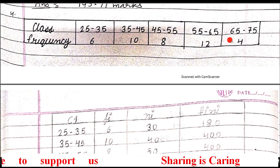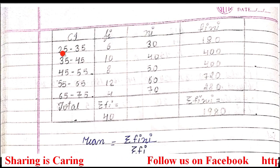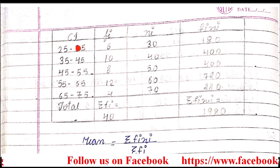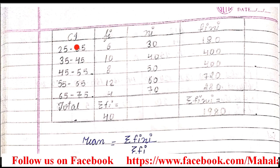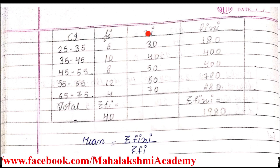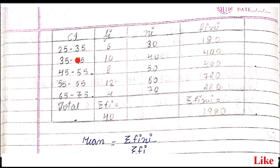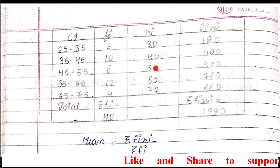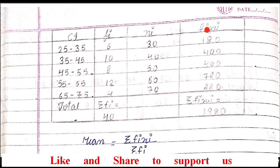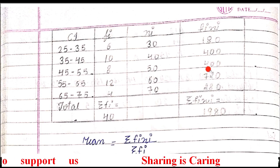Then fi is frequency, so we write down the frequencies here. To find out xi (class mark), we add the limits. When you add 25 and 35, the sum is 60, and 60 divided by 2 is 30. The formula of class mark is upper limit plus lower limit upon 2. In the same way, upper limit is 45 and lower limit is 35 for the next group: 45 plus 35 is 80, and 80 upon 2 gives 40. Write down the class marks for the remaining groups, then multiply fi and xi to get the fi·xi values.